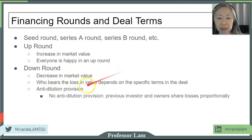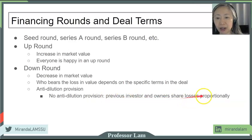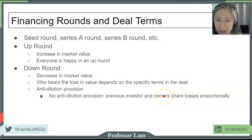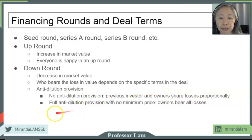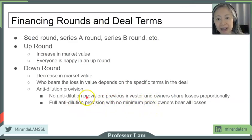There are a few options. If there is no anti-dilution provision, then the entrepreneur and the investor share the losses proportionally — meaning they are not protected. In a full anti-dilution provision, meaning there is no minimum price, then the owner bears all the losses.